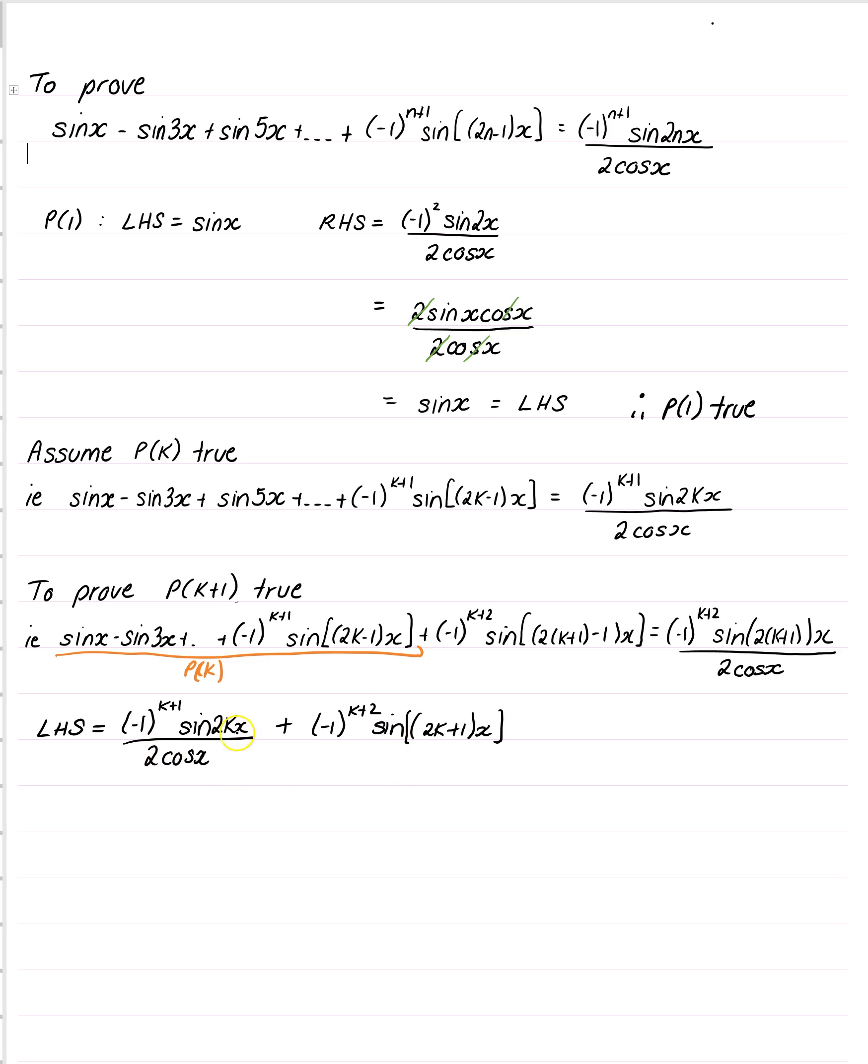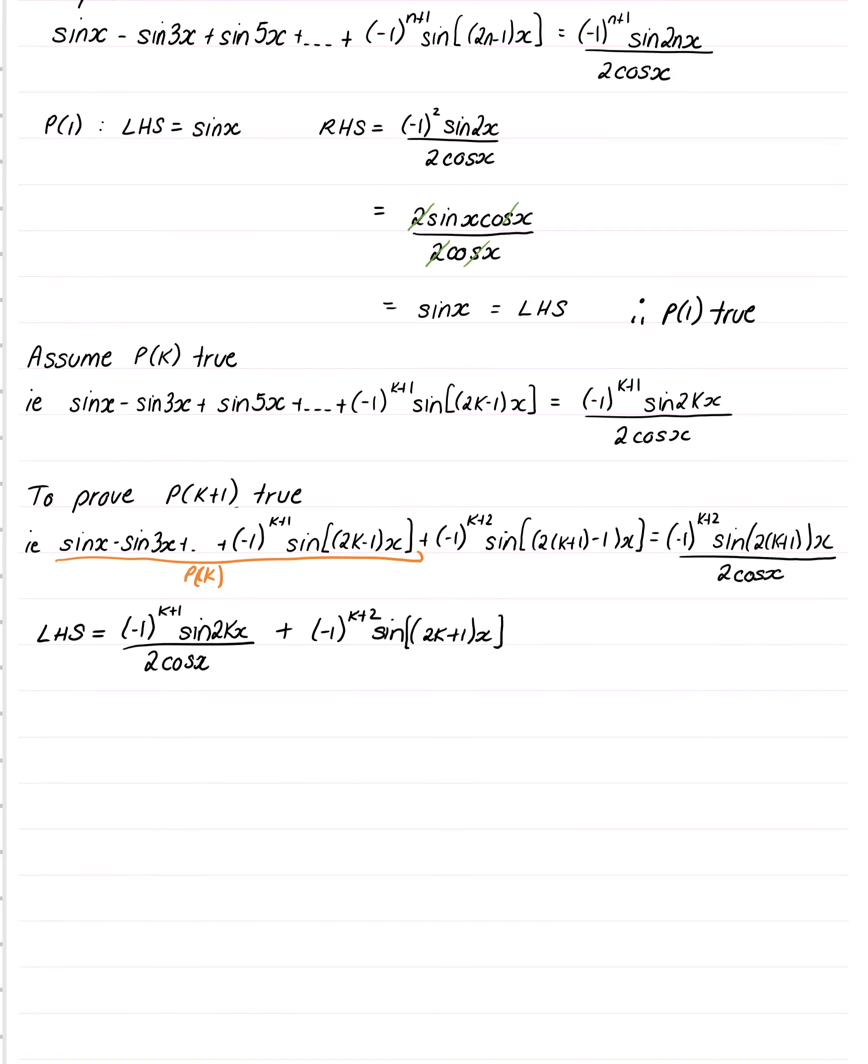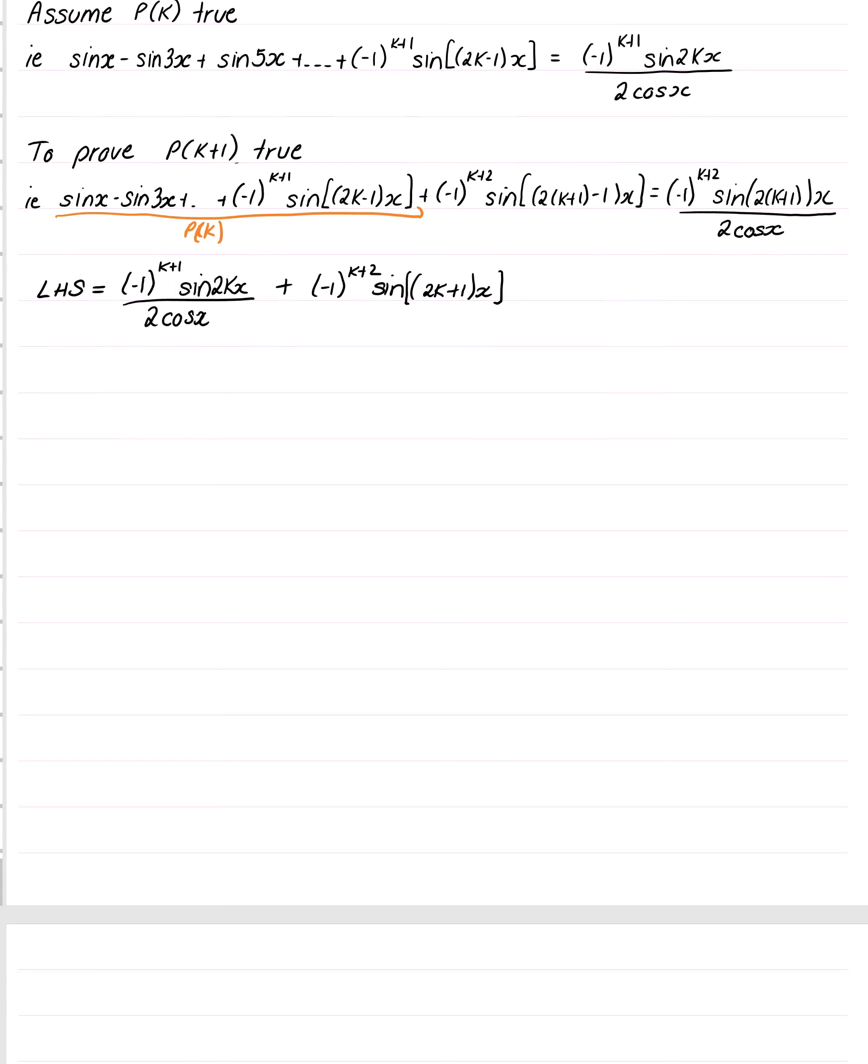So we're wanting this to look like this. The first thing that I'm going to deal with is this minus 1 here, because in the proof on the right-hand side, we want a minus 1 to the k plus 2. Now, this is a k plus 2, but this is a k plus 1. Now, it's pretty simple to turn the k plus 1 into a k plus 2,